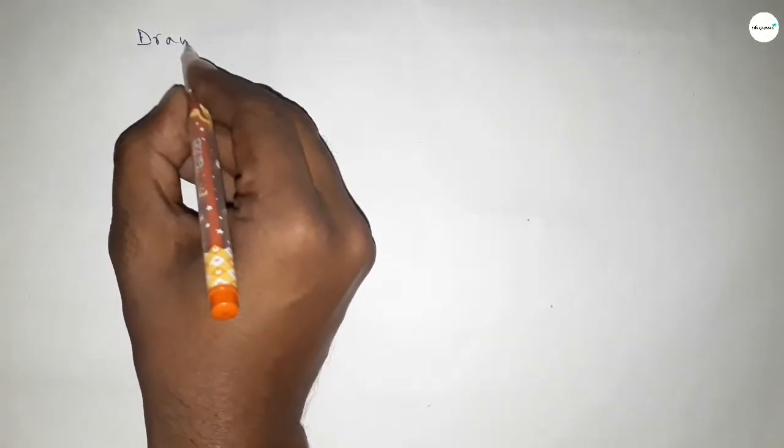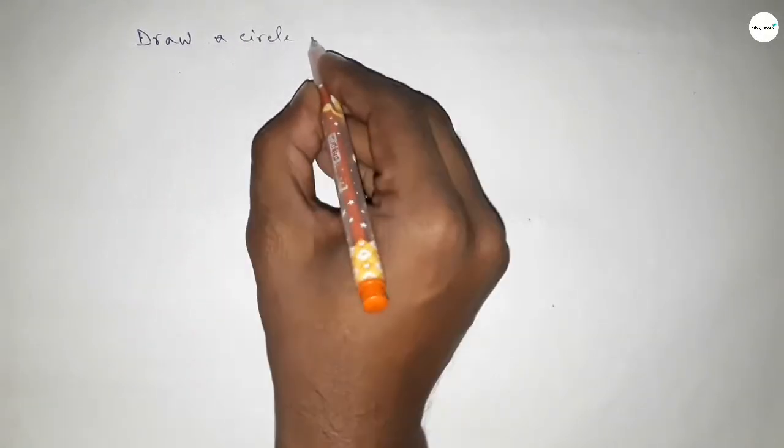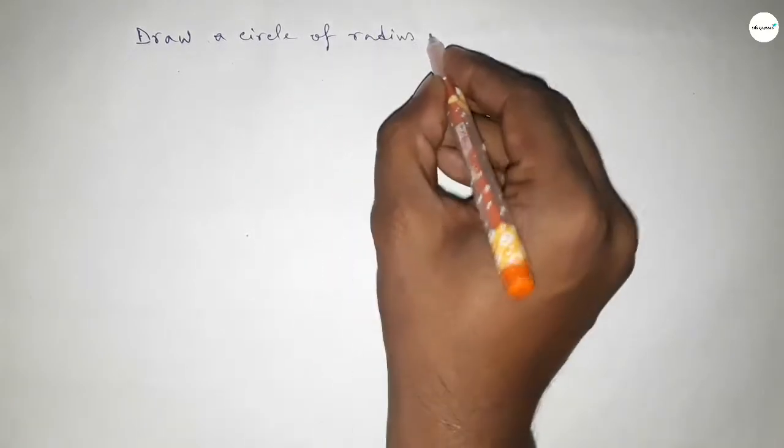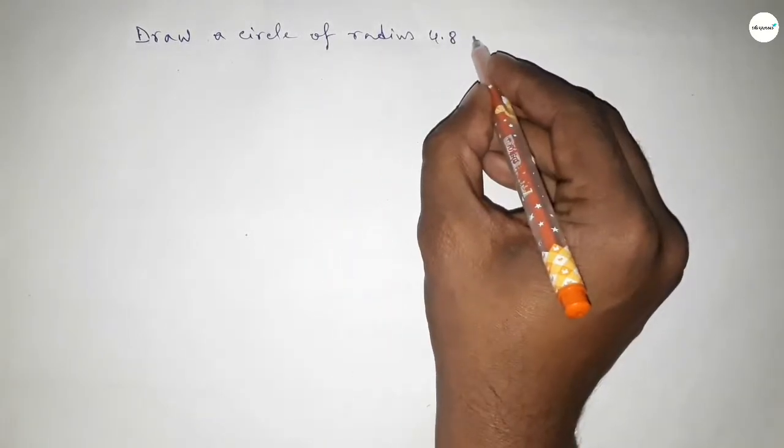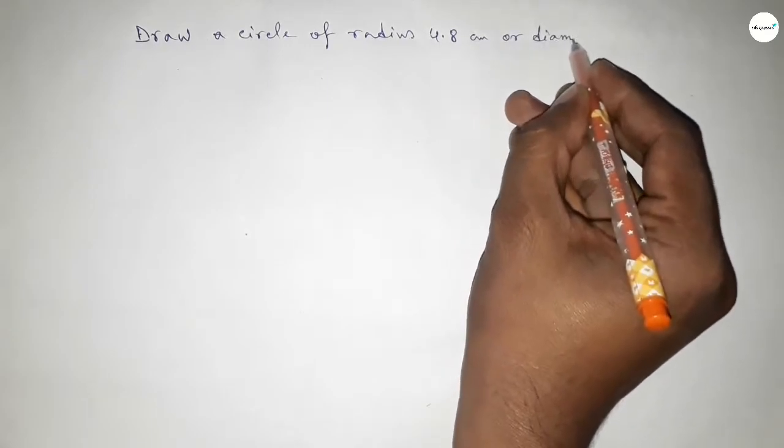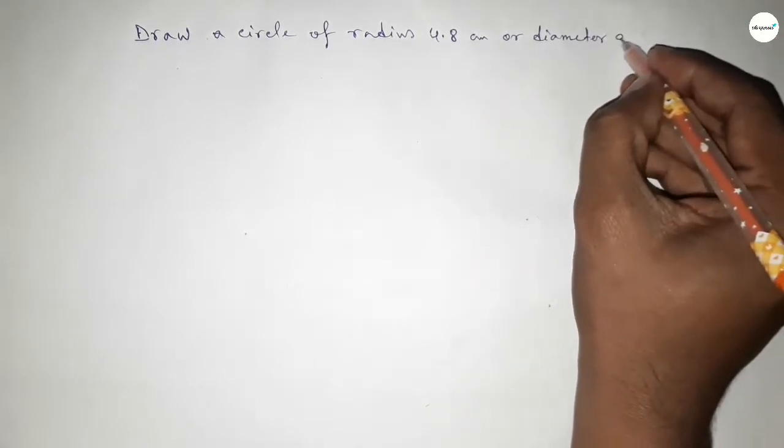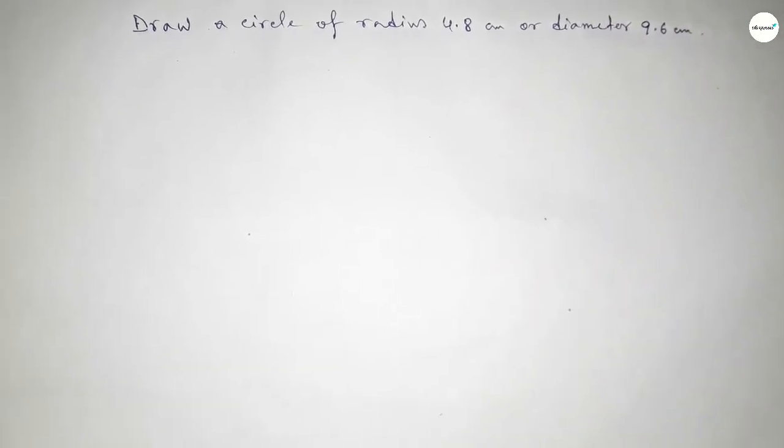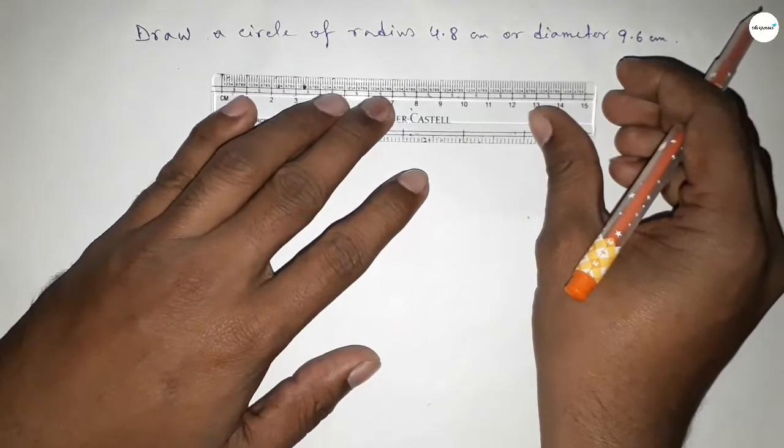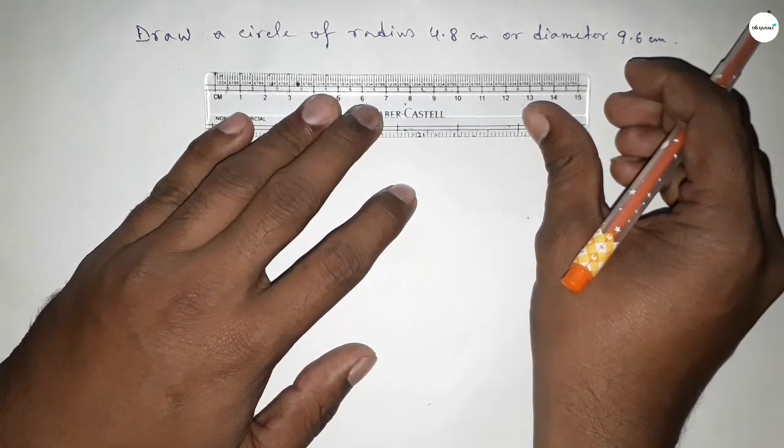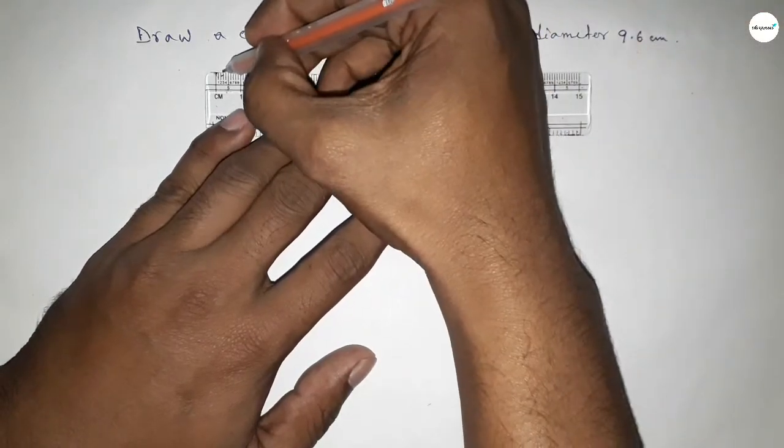Hi everyone, welcome to SI Share Classes. Today in this video we have to draw a circle of radius 4.8 centimeter or diameter 9.6 centimeter. So let's start the video. First of all, drawing here the radius 4.8 centimeter.